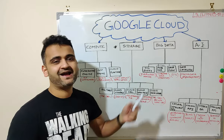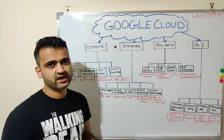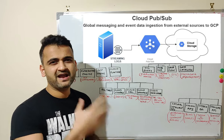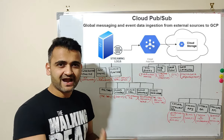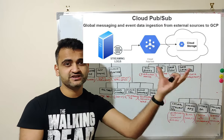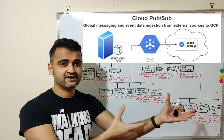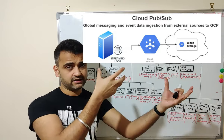Pub/Sub is an interesting product used to ingest streaming data into Google Cloud Platform. Imagine a server running and generating logs every few milliseconds — those logs need to be captured and analyzed. Pub/Sub is a middleware that sits between that data source, which generates huge amounts of data every second, and GCP. It fetches that live streaming data from the source and ingests it into Google Cloud Platform.